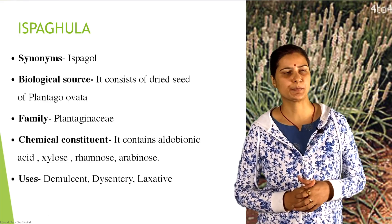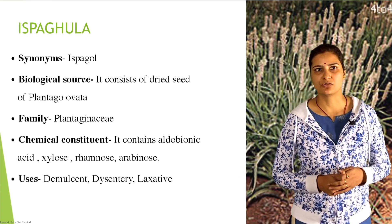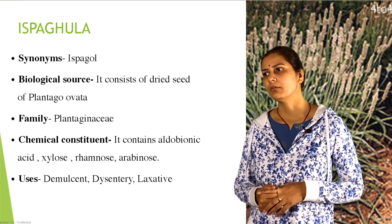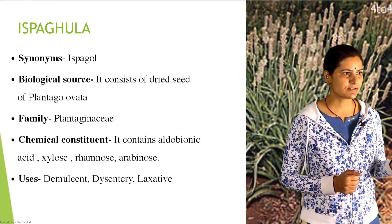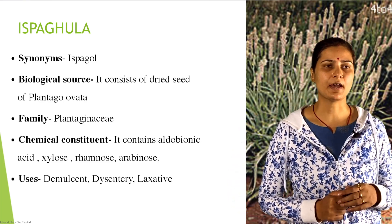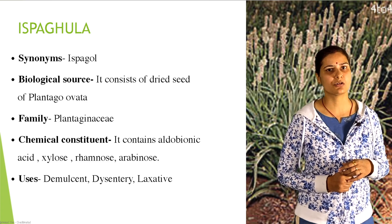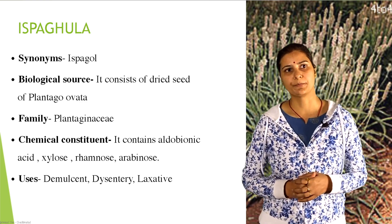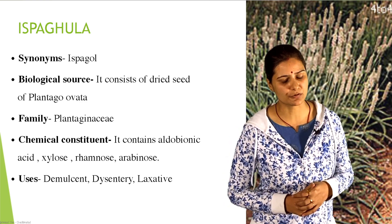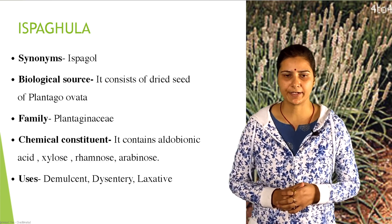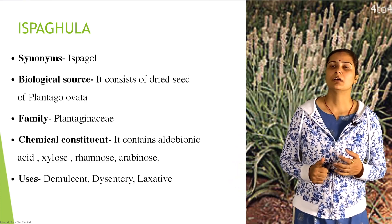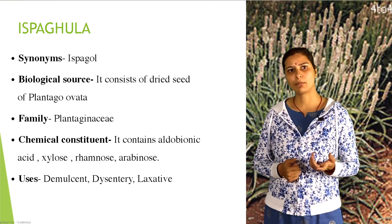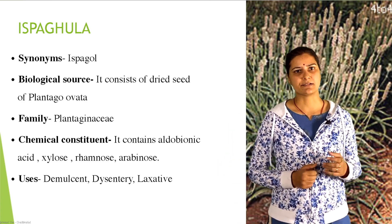Third drug: ispaghula. Synonym: subgol. Biological source — it consists of dried seeds of Plantago ovata, belonging to the family Plantaginaceae. Genus: Plantago; species: ovata. Chemical constituents: aldobionic acid, xylose, rhamnose, arabinose. Geographical source: indigenous and cultivated in India, Punjab. Uses: demulcent, dysentery, and laxative. Demulcent protects the mucous membrane. Dysentery is infection of the intestinal tract with diarrhoea and blood.